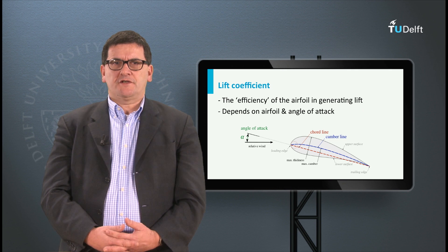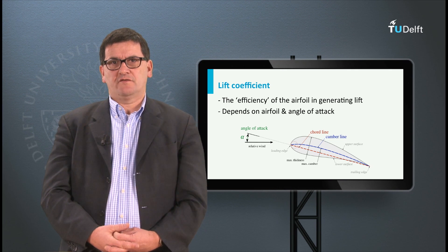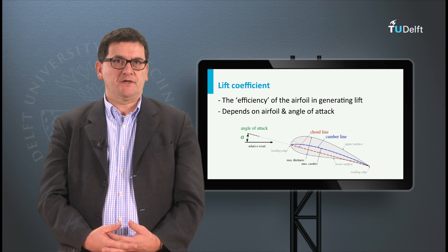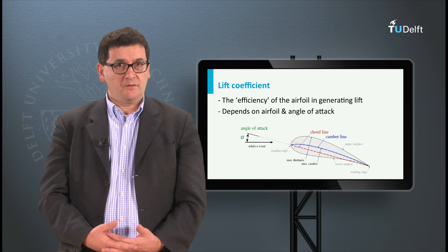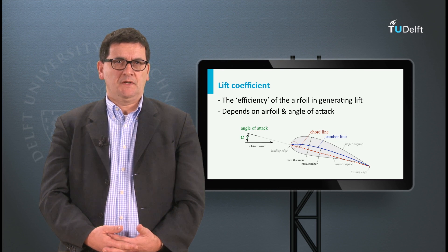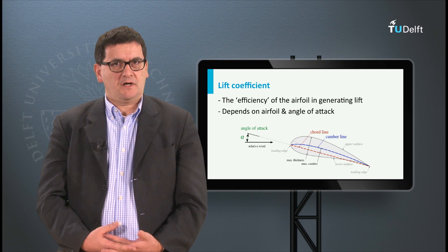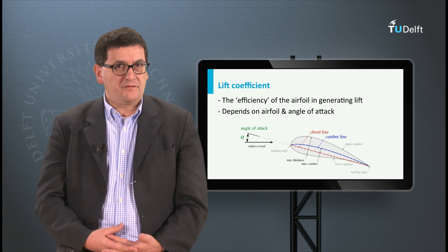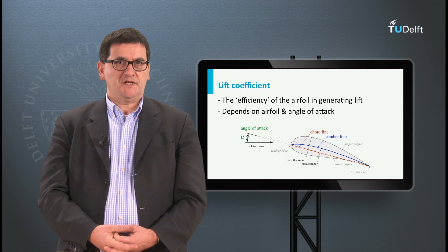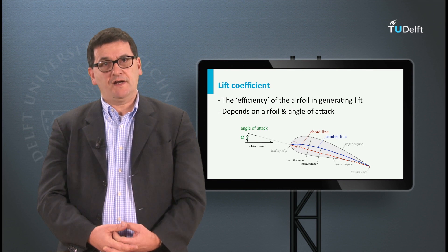The lift coefficient, which is dimensionless, includes a number of aspects of a particular wing like the geometry, the airflow around the wing, etc. Key parameters influencing the lift coefficient are the angle of attack and the geometry of the airfoil, which is the cross-section of the wing in flying direction.